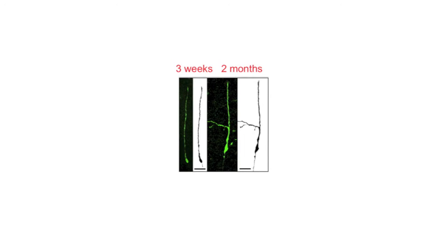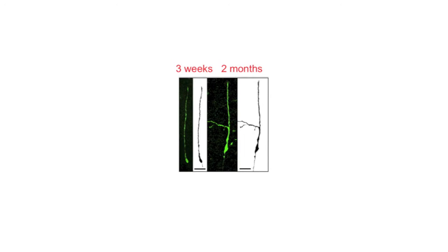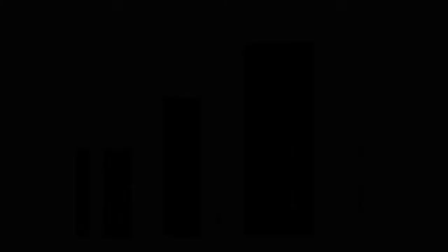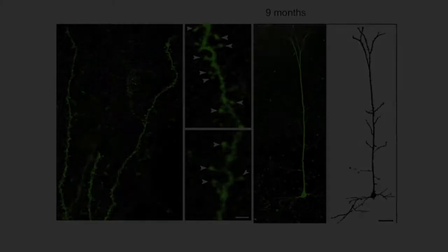Following nine to ten months post-transplantation, these neurons considerably complexified, now presenting a complex apical dendrite with numerous dendritic branches. At these latest stages, we closely detect the presence of several dendritic spines, suggestive of the establishment of synapses.